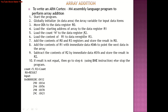Next, load the starting address of the array into R1. Then load the count value into R2. In the next step, transfer the data pointed to by R1 into R3 register. After that, add the content of R0 with R3 and store the result in R0. According to the pipeline characteristics of ARM Cortex M4, the current memory pointer is incremented by 4 to fetch the next data element.